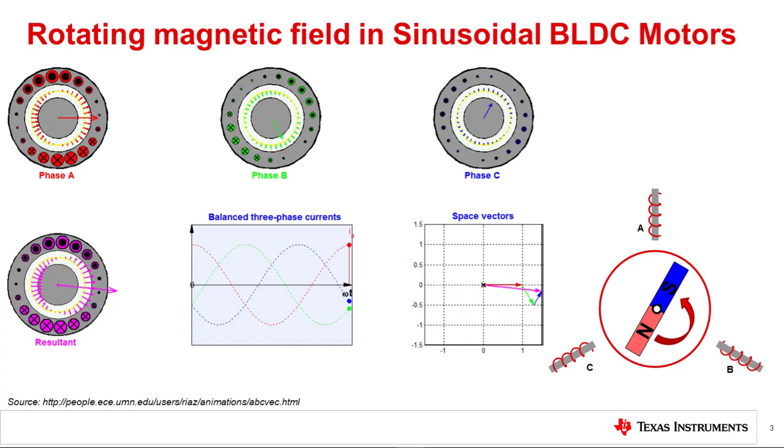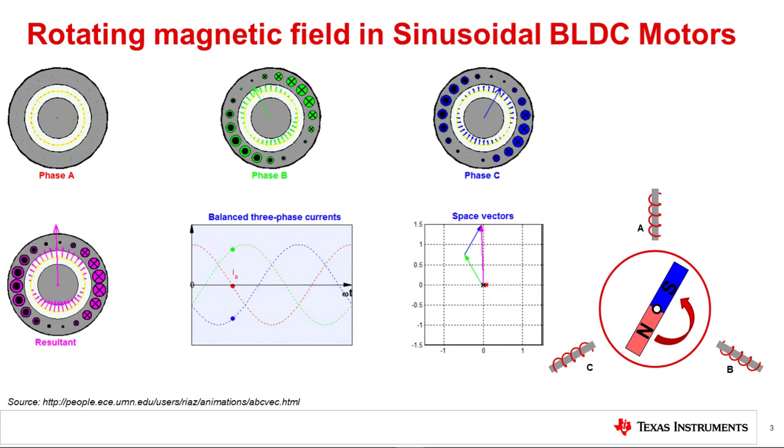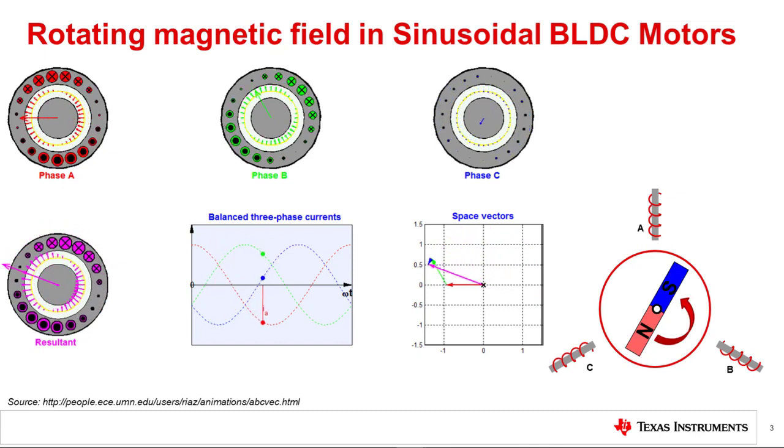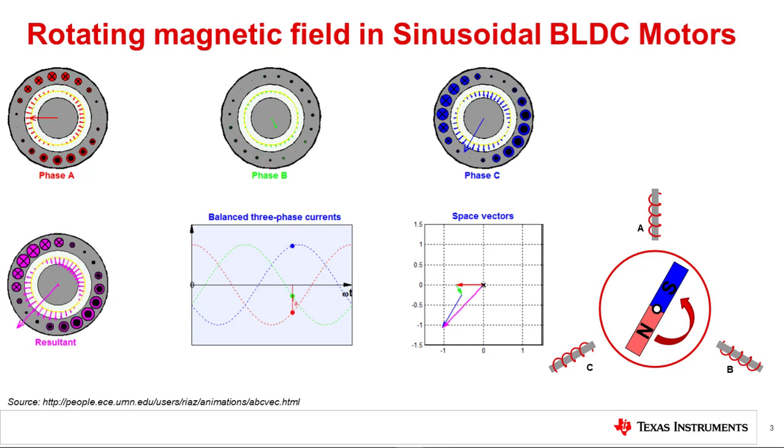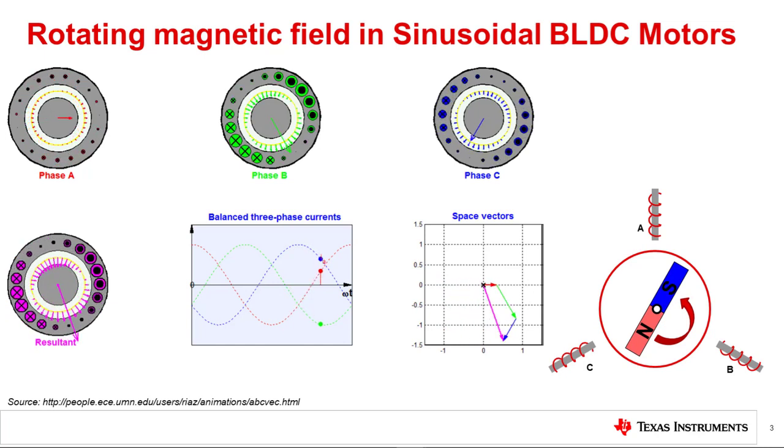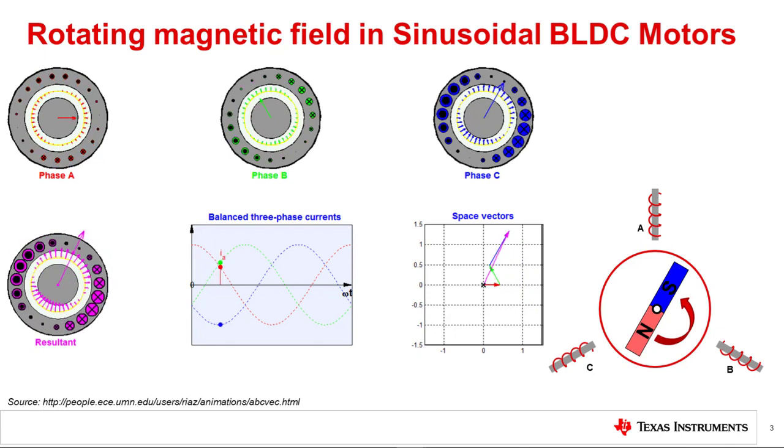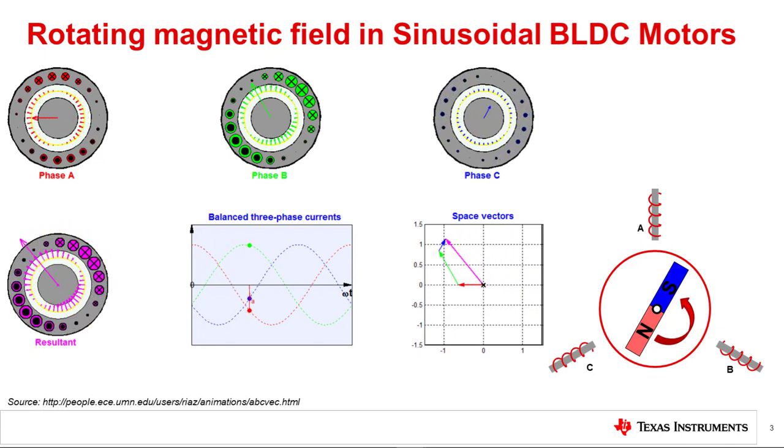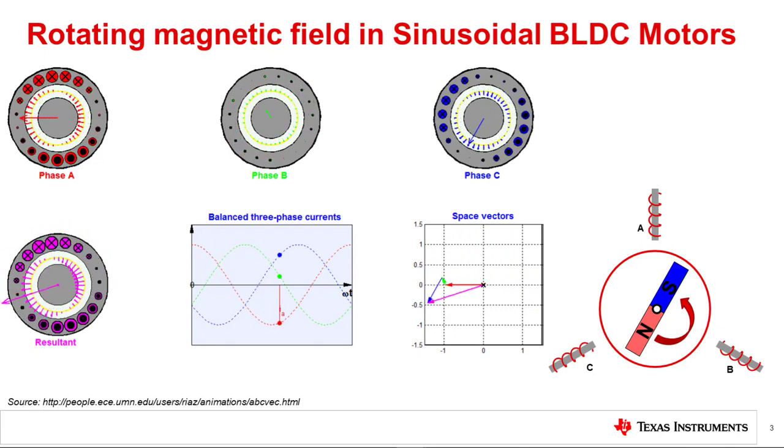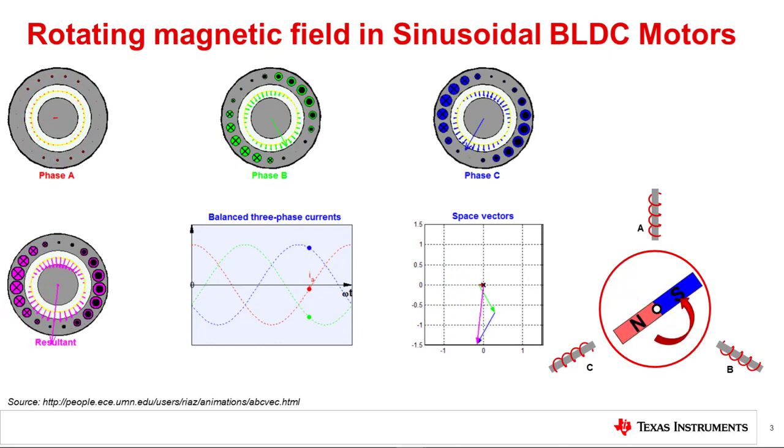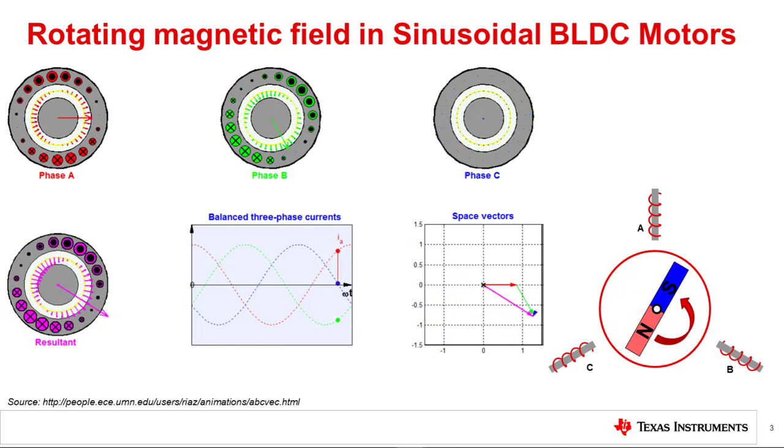The magnitude of the space vector of all three phases are minimum during the zero crossing and maximum at the peak. If we add these vectors together, the result is a smoothly rotating magnetic vector as shown by the space vector plot. As far as the rotor is concerned, the stator looks like it is spinning at a frequency equal to the frequency of the sinusoidal current.